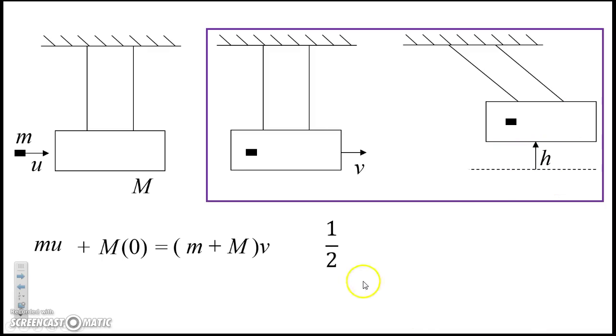So on the left side, we have the formula for kinetic energy: one-half mass times speed squared. Their speed is v, the final velocity after the collision. On the right side, we have the equation for gravitational potential energy: mass times g times the height.